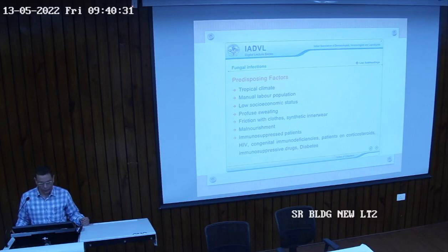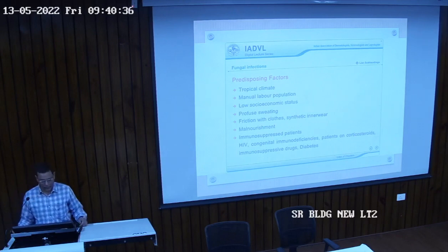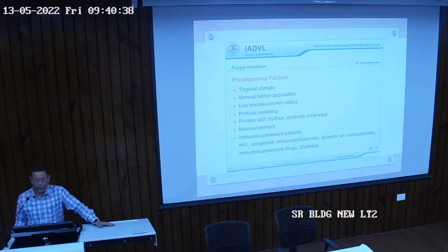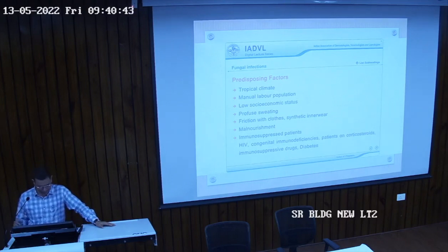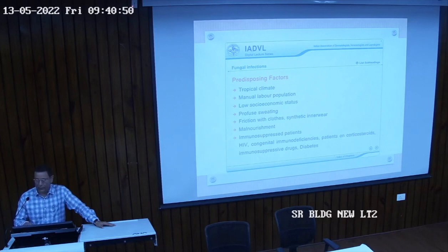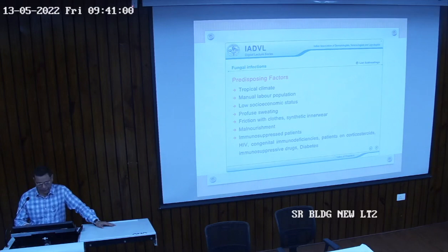Other predisposing factors include low socioeconomic status, profuse sweating, friction with close synthetic innerwear, malnutrition, and immunosuppressed patients. Immunosuppression leads to all sorts of infections, and fungal infection is one of them. HIV, congenital immunodeficiencies, patients on corticosteroids — these lead to immunosuppression, which leads to much more infections. Fungal infection is common in malnourished and immunosuppressed patients.